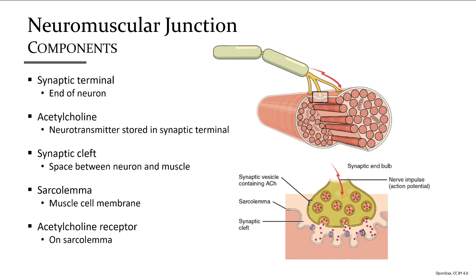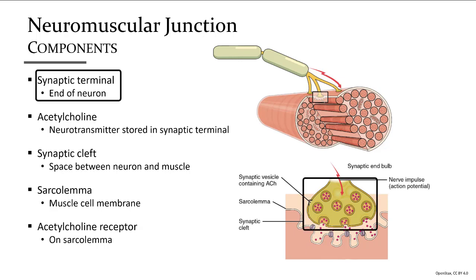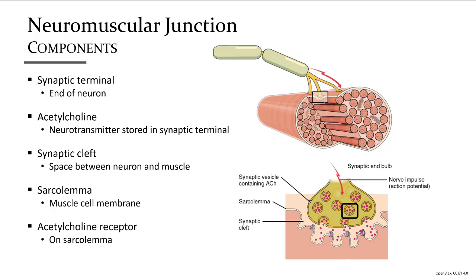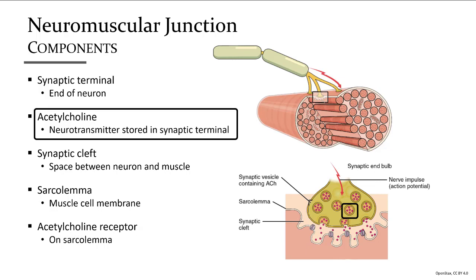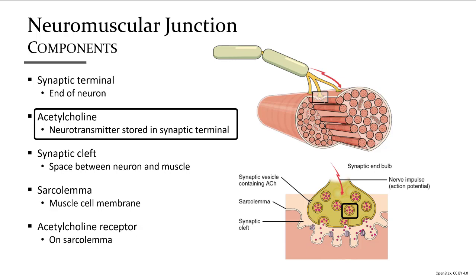The components of a neuromuscular junction include the synaptic terminal — the end of the neuron — which contains small packets called vesicles filled with the chemical acetylcholine. This is one of many types of neurotransmitters; acetylcholine is the type that activates skeletal muscle cells. The nerve does not touch the muscle — it just hovers over it.